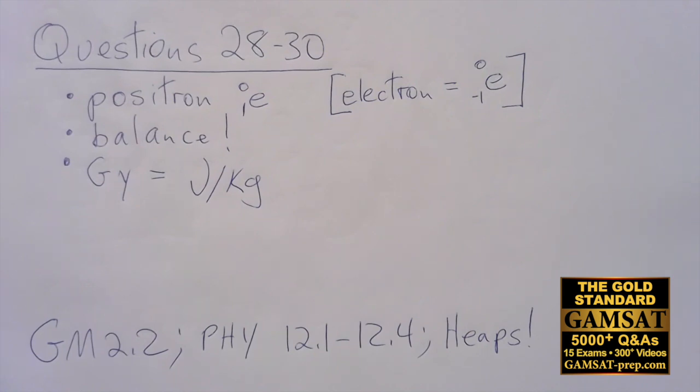Answer choice C, we have 18 in the superscript going to 18 plus 0 perfect, and then in the subscript we have 9 going to 10 plus 1, that's 11, no it doesn't work. If that was an electron e negative 1 in the subscript then it would work, but it's a positron so it doesn't.